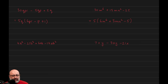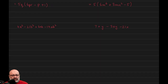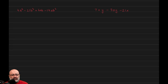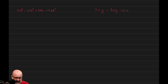For these last two questions at the bottom of the screen, we have to factor by grouping. Hopefully you realize that grouping is a technique only used when we have four terms. In this case, we have four terms each, so it's set up correctly. For grouping, we're basically doing GCF twice.